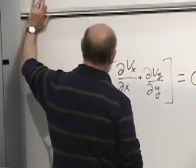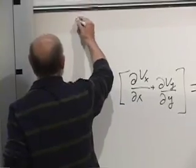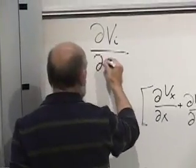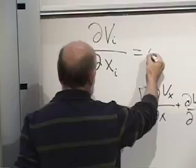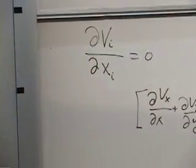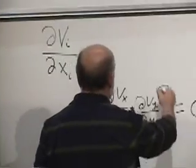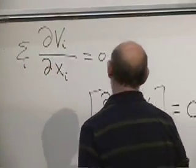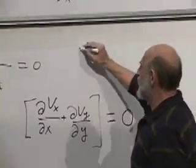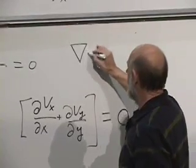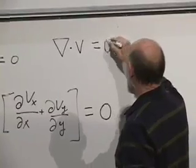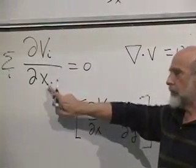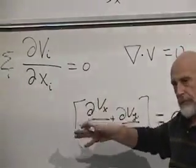In any number of dimensions, the general rule for an incompressible flow is that the derivative of the i-th component of the velocity with respect to the i-th coordinate, summed over i, is equal to zero. This is written as: the divergence of v equals zero. Divergence simply means differentiating the i-th component with respect to the i-th coordinate and summing them up.